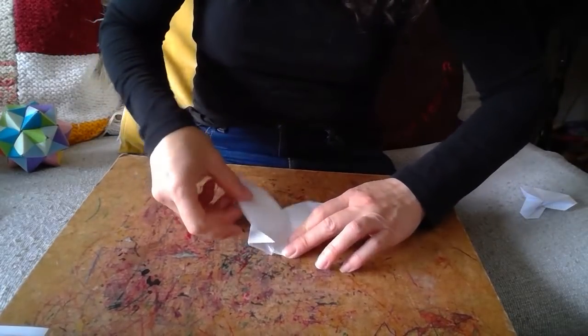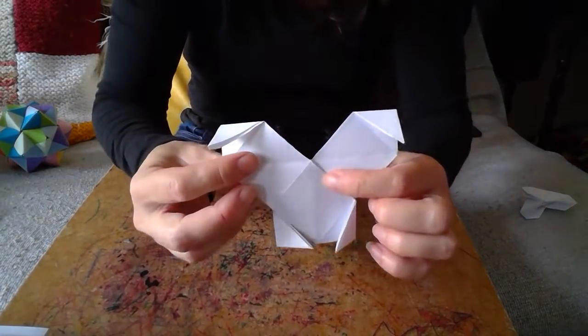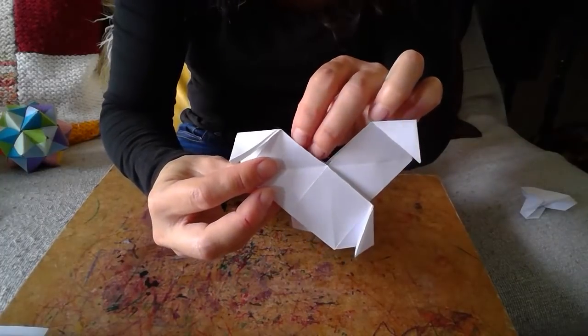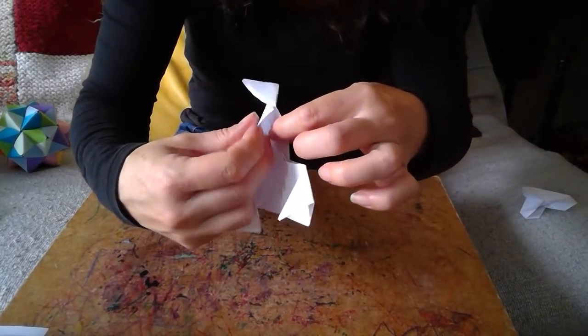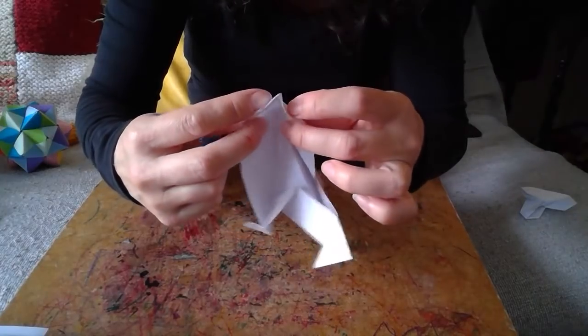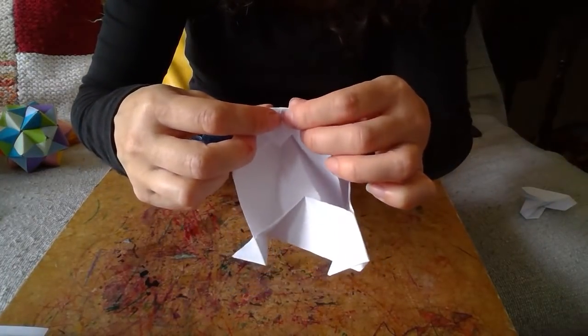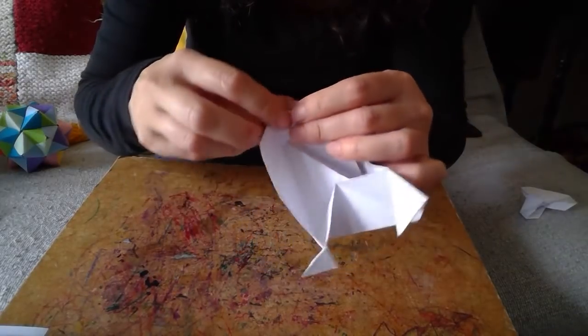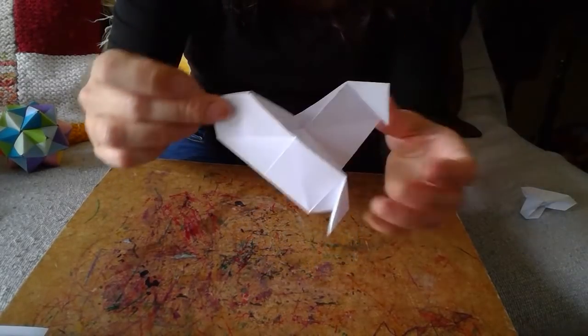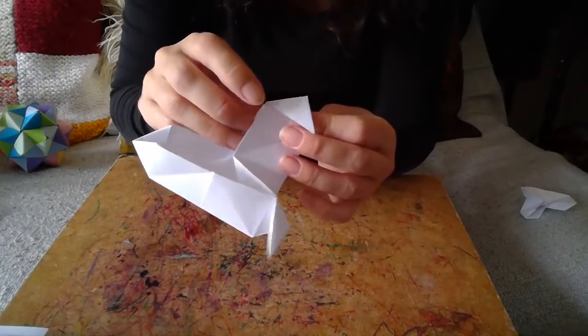These flaps look a little bit messy, don't they? So we can get rid of them. So if you take one side, this is all a pocket. I'm opening it up and I'm just going to push that inside. So I'm not adding any extra lines but I'm just tucking it away, pushing it inside.